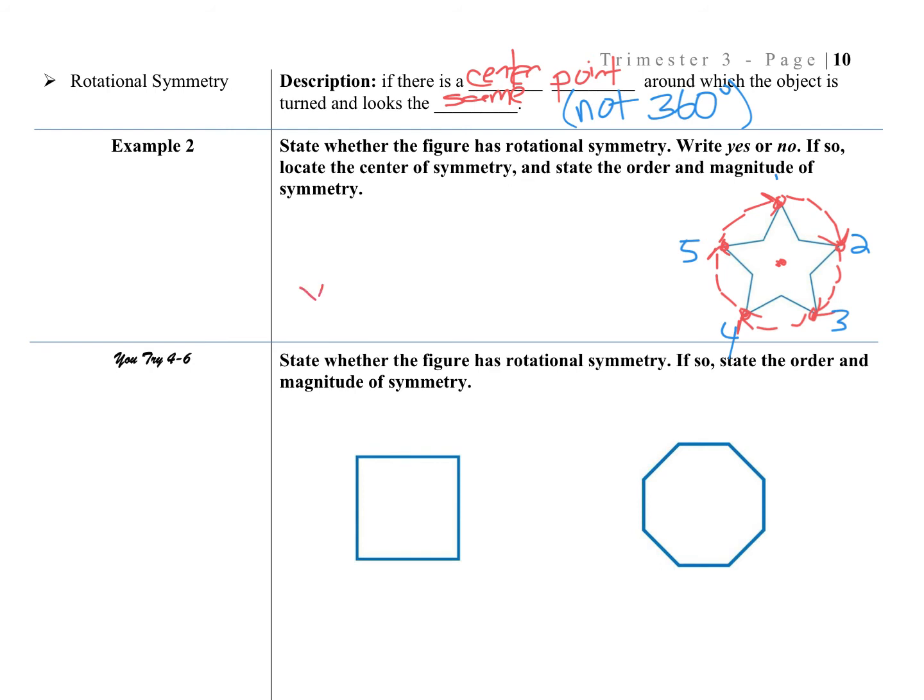So in this case, we would say that yes, this does have rotational symmetry and how to find the magnitude. To find the magnitude is we're going to take every circle is 360 degrees. And how many spins can we do or turns? So we're going to do five turns as we counted.